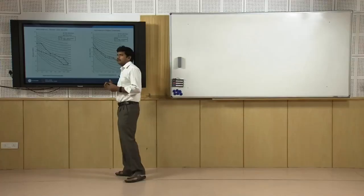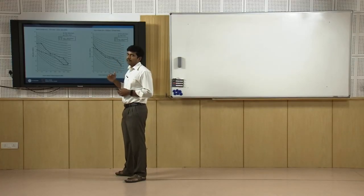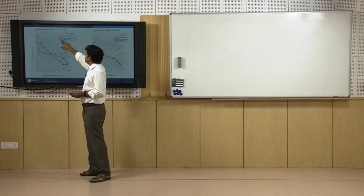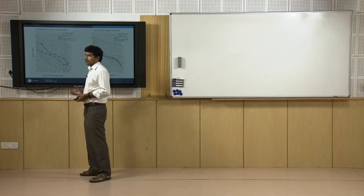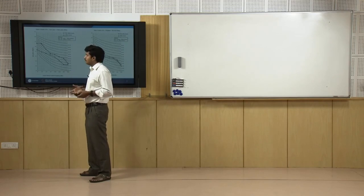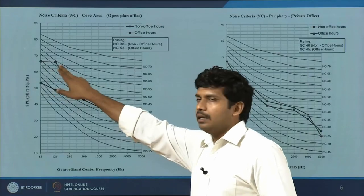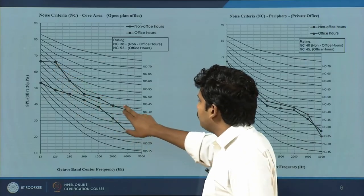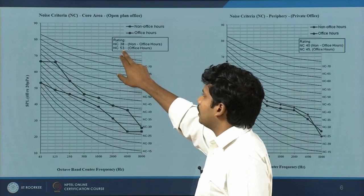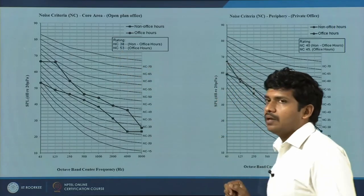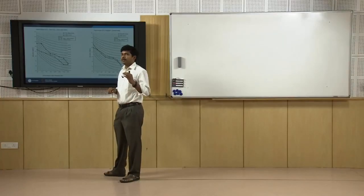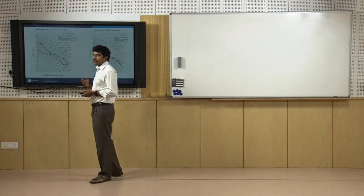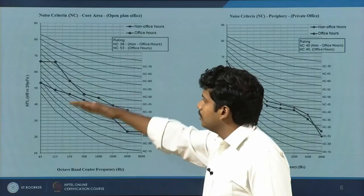If the standard for an open office requires NC 40, and during non-office hours we are getting NC 38, that is acceptable. But during office hours, low-frequency levels rise due to machinery and reprographic background noise, plus people conversing — we found around NC 53. So if we have to meet NC 40, we will not be meeting it during office hours and will have to go for certain acoustical treatment to bring the noise criteria down.